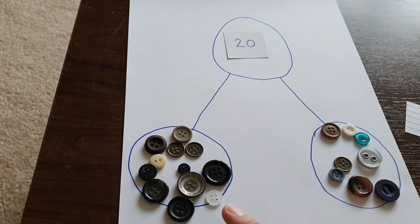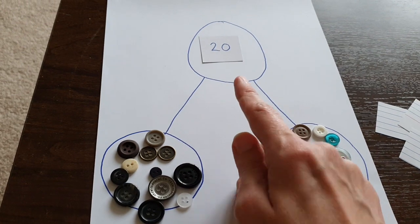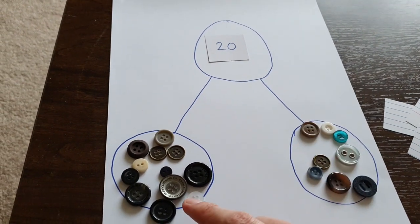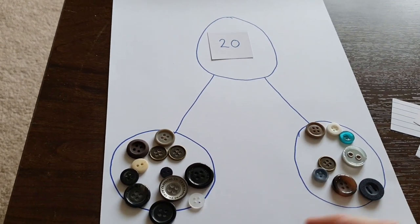Or I can say 8 add 12 makes 20. Or I can do subtractions and say 20 take away 12 is 8, and the other way around.